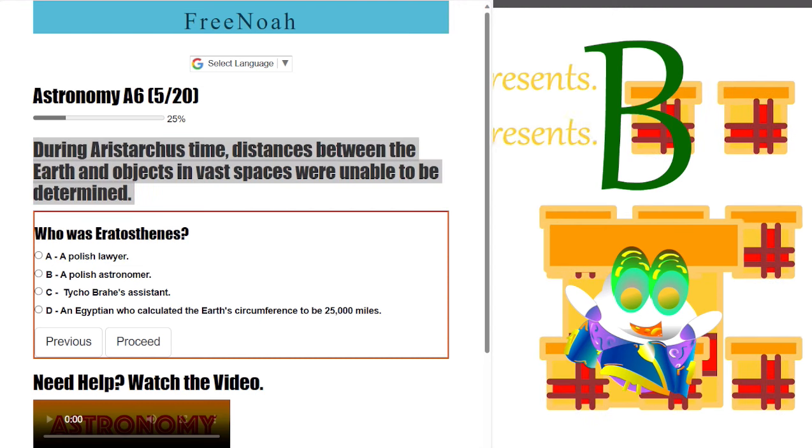Aristarchus's time was in the BC era, while the first telescope was invented in the 1800s. The calculations Aristarchus provided the scientific community were way off, but they made general sense, such as the sun is bigger than the moon.